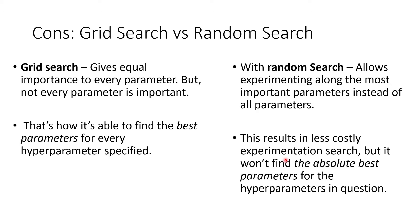The positive side of Random Search is that it is less costly in time and machine resources. But on the negative side, it will not give you the absolute best parameter for the hyperparameters you are searching for. So the trade-off is: less costly in time and resources, but not guaranteed to find the optimal values.